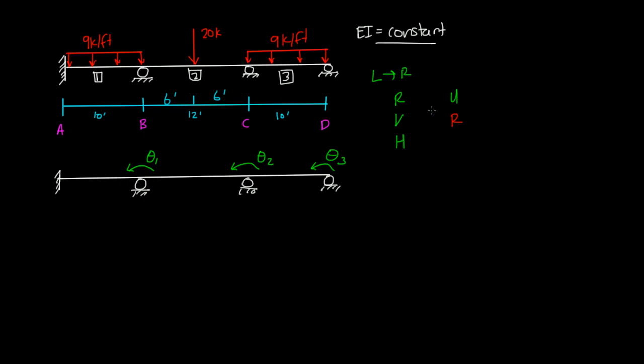Now we move on to unrestrained vertical ones. And since there are no unrestrained vertical ones, we skip that. Horizontal, we're actually going to ignore because there's nothing here on the beam that causes a horizontal reaction. So we're just going to skip the horizontal one entirely.